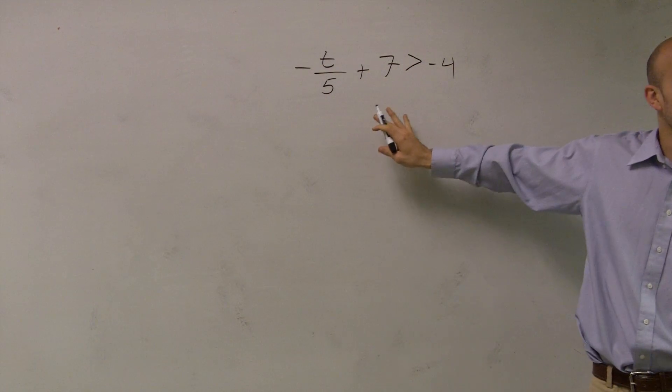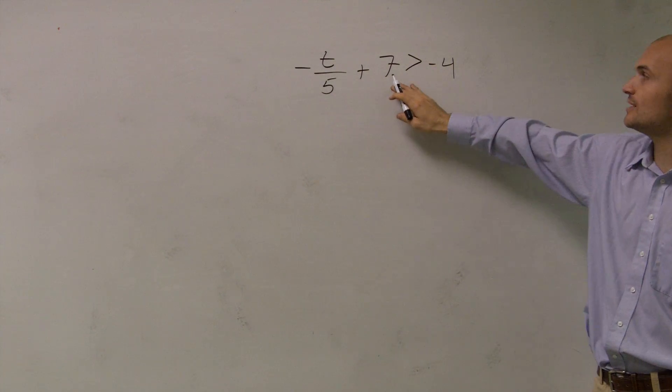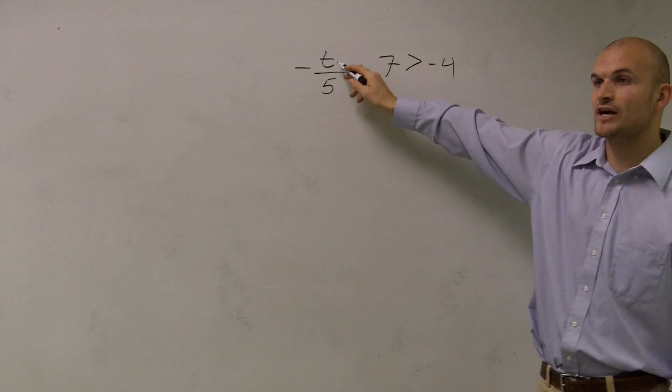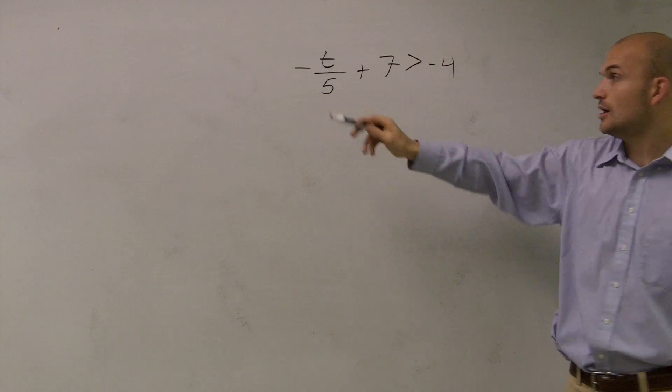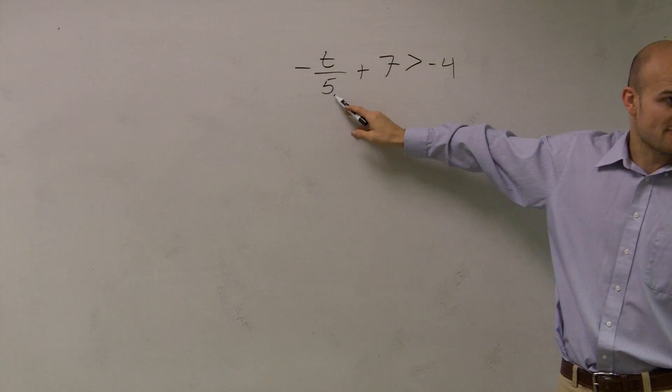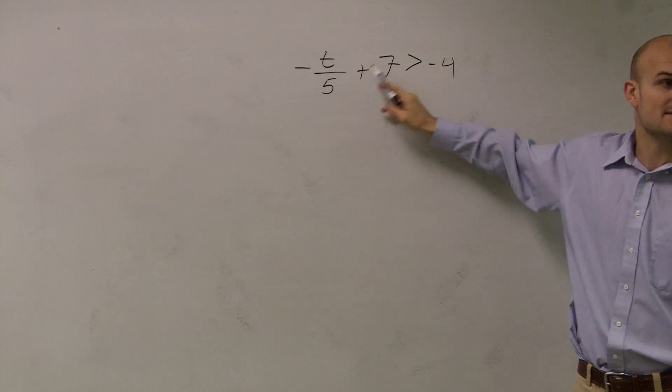So if we go ahead and take a look at the problem, what you want to do is just treat it like it's an equation. We take a look at our variable and say what is happening to our variable. Well, our variable is being divided by 5 and a 7 is being added to it.